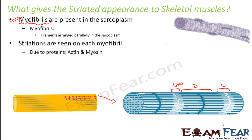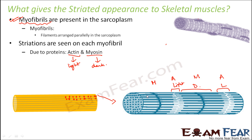These striations are due to the presence of two proteins — actin and myosin — present inside the myofibril. Actin gives rise to the light bands and myosin gives rise to the dark bands. Actin and myosin proteins are present alternately on each myofibril, giving a striated appearance. Since several myofibrils form the muscle fiber, the muscle fiber also gets a striated appearance.